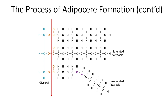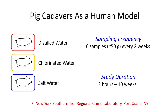There are two types of fatty acids: saturated and unsaturated. The difference between them is the double bond — the unsaturated type does not fully saturate with hydrogen. We don't have human bodies to study, so we work with a regional crime lab and use pig cadavers as a human model. We decided to put them into three different types of water and see what happens.